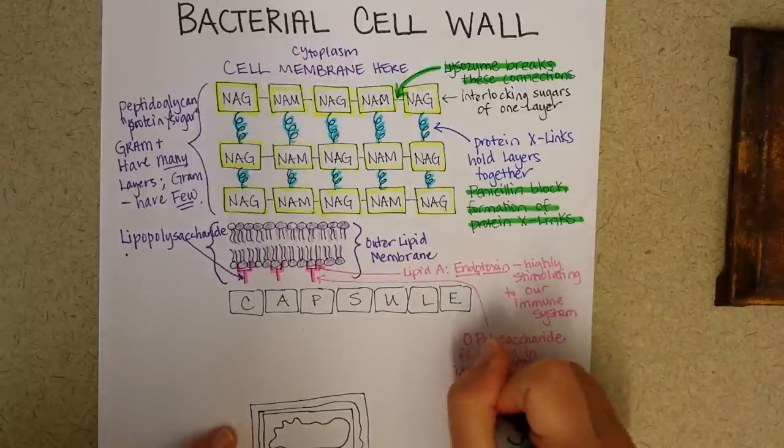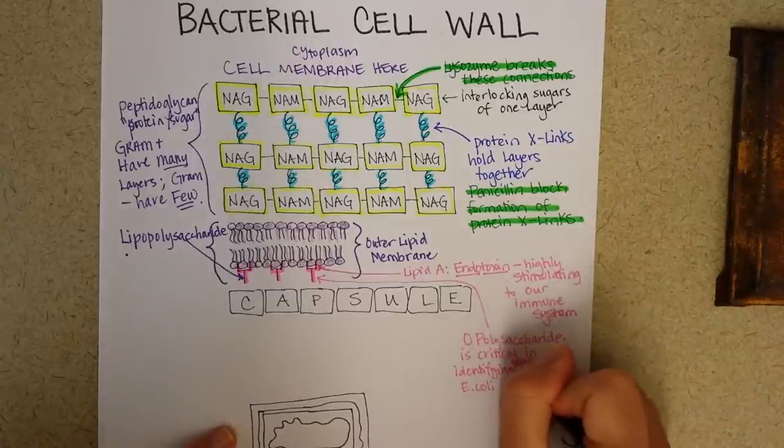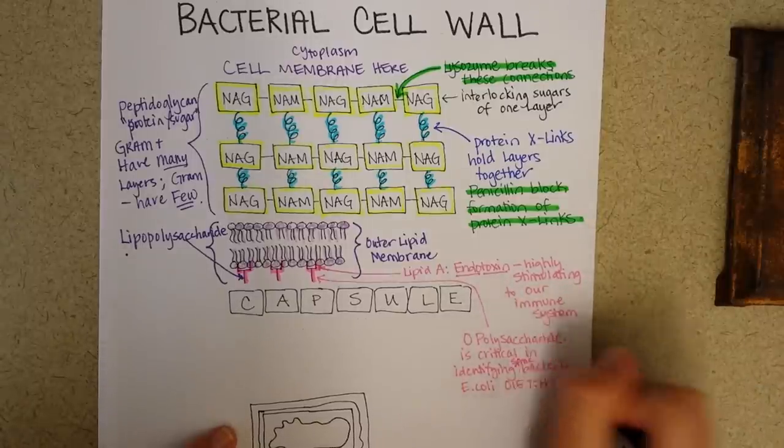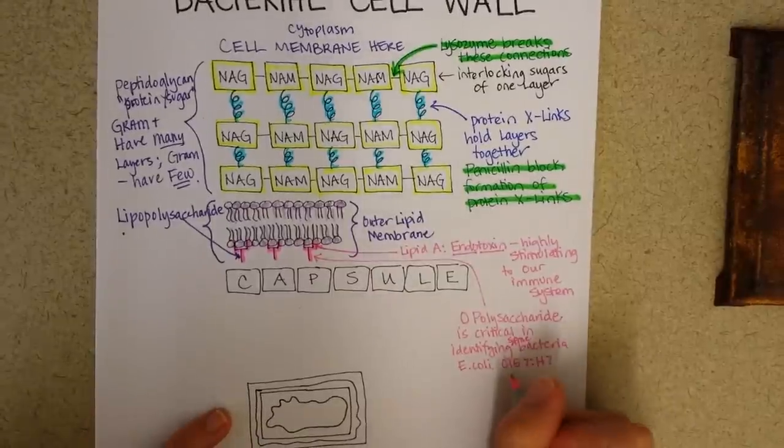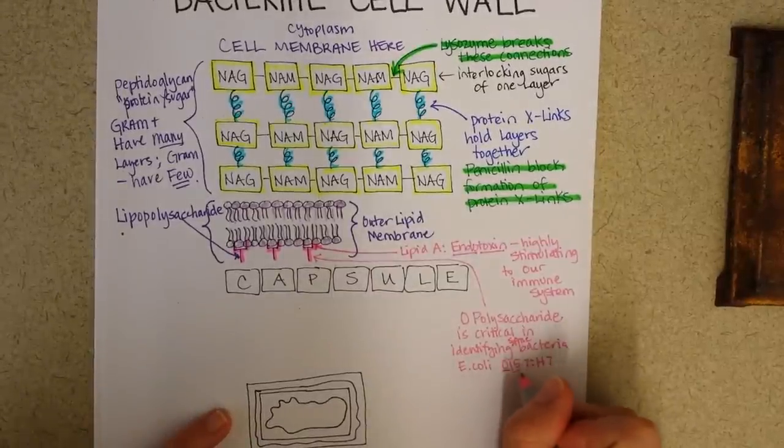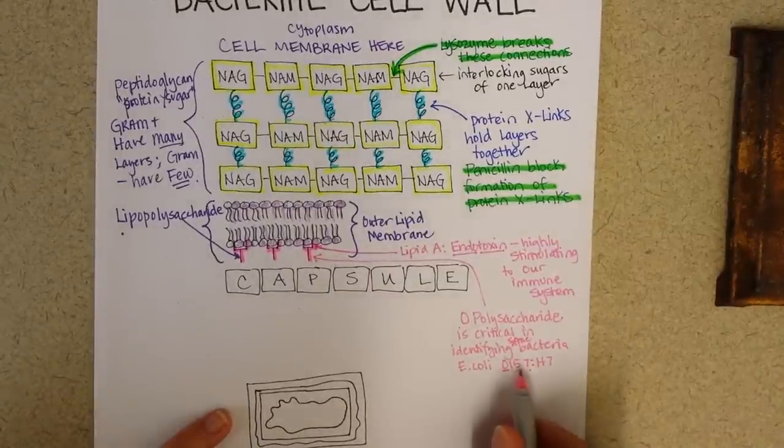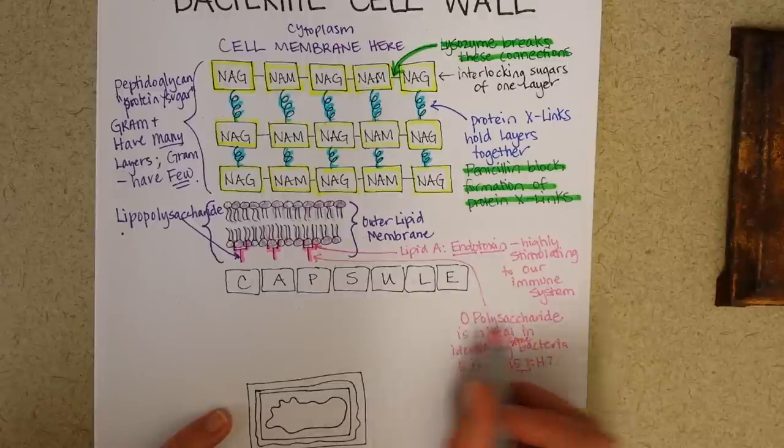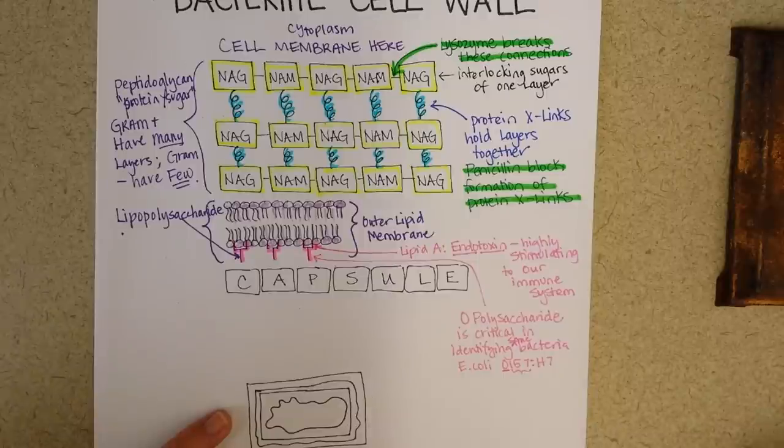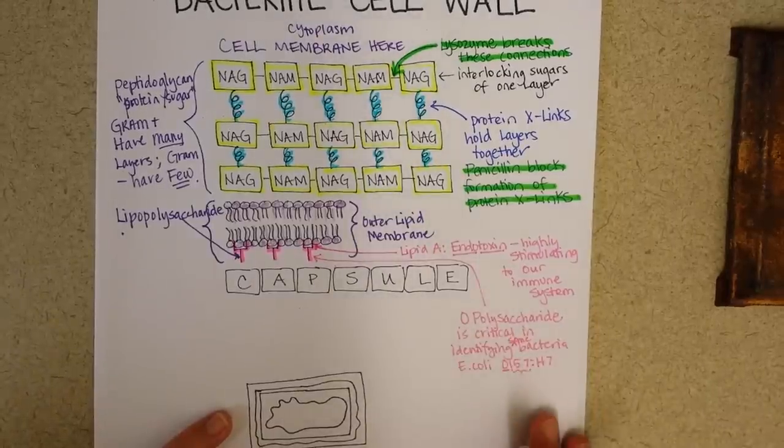I should say in identifying some bacteria. For example, E. coli O157H7, part of its name, you see the O right there, means it's the 157th strain of E. coli. So in other words, there are many, many different forms of this with the O polysaccharide.